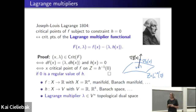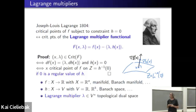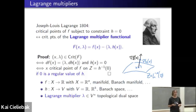The target of the constraint h should be a vector space — it could be R^k or a Banach space itself. In that case, the Lagrange multiplier would naturally live in the topological dual of v.